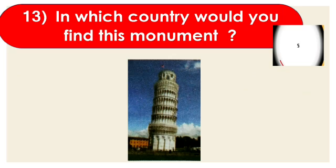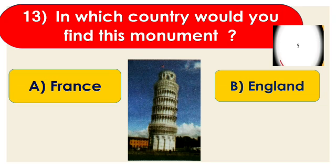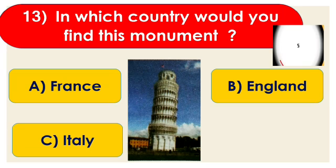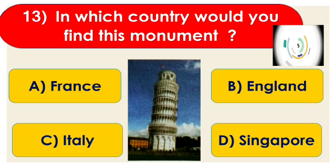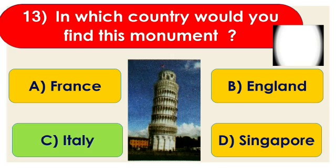Question number 13: in which country would you find this monument? Options are A. France, B. England, C. Italy, and D. Singapore. The right answer is Italy. First of all, identify the picture — this is the Leaning Tower of Pisa. It is in Italy and is famous for its lean, still standing without any support.